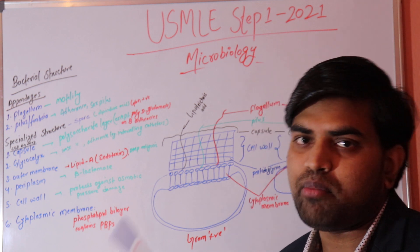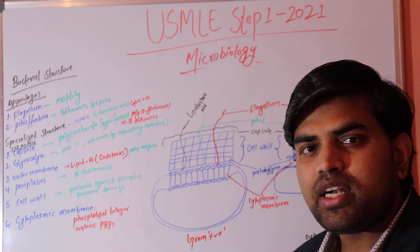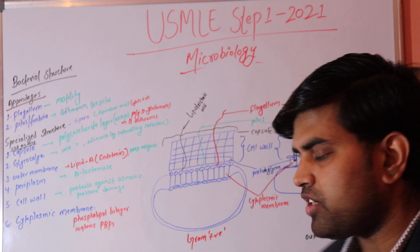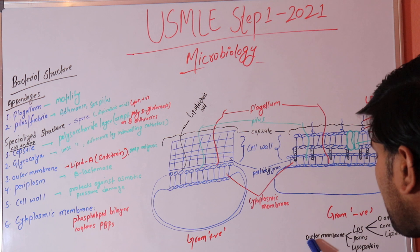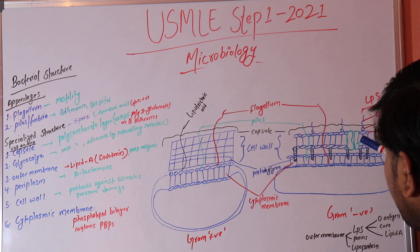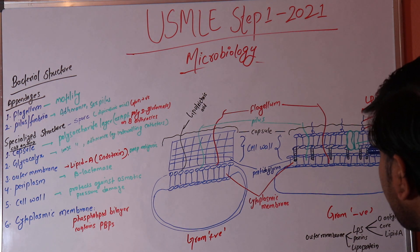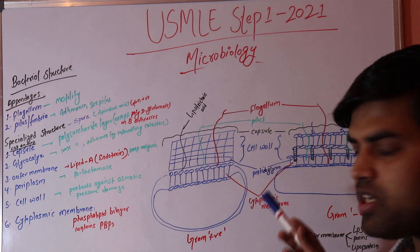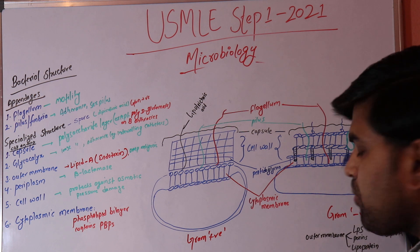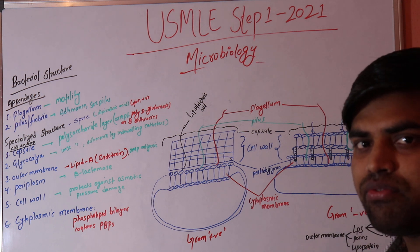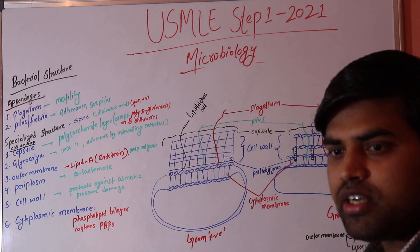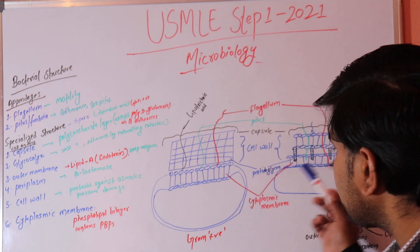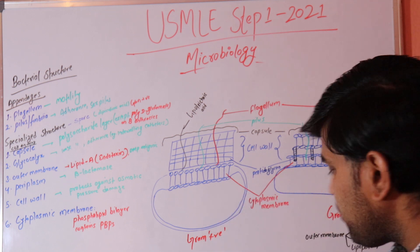Gram negative bacteria have an extra structure called the outer membrane, which differentiates them functionally. This outer membrane contains LPS, porins, and lipoproteins. Drugs must pass through the porins to enter the bacterial cell, so they must be small enough to fit through. Larger drugs cannot act on gram negative bacteria — they only work on gram positive bacteria.